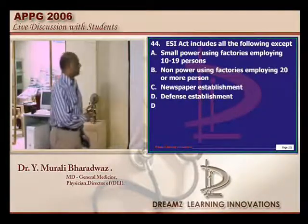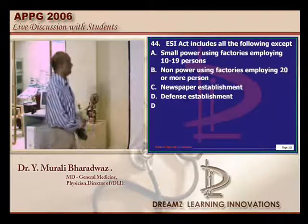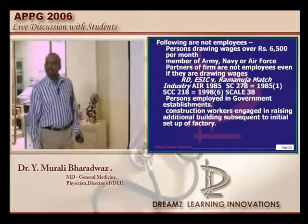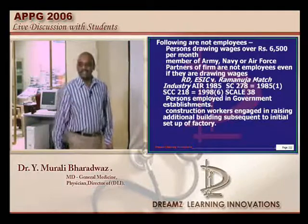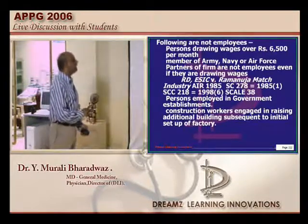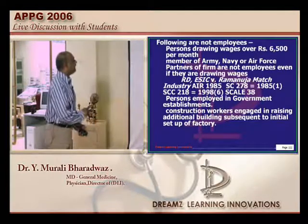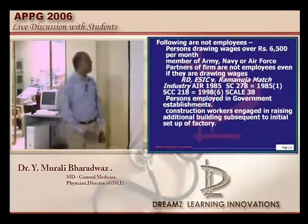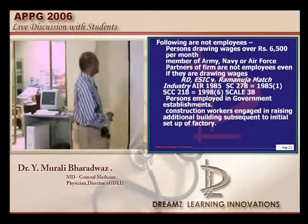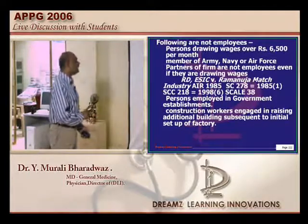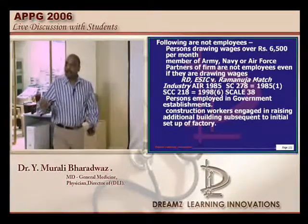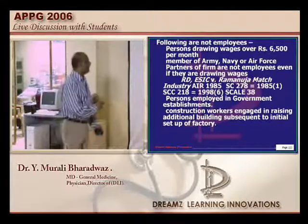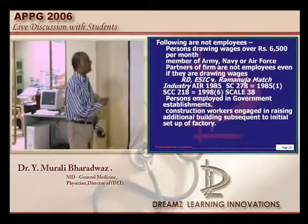ESI Act typically includes everybody except those in defense. Persons drawing wages over 6500 rupees per month, members of the army, navy and air force, partners of a firm who are not employees even if drawing wages, persons employed in government establishments, and construction workers employed after the original construction is over to maintain that construction — these are all not included in the ESI.